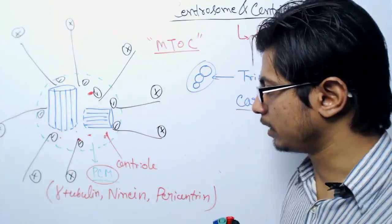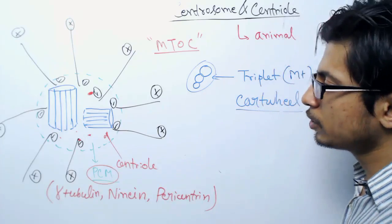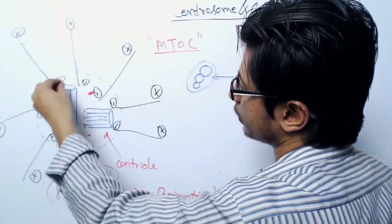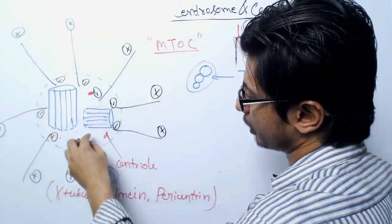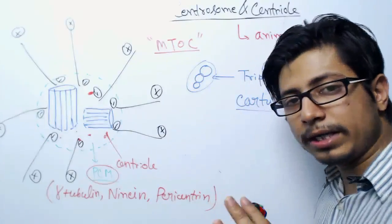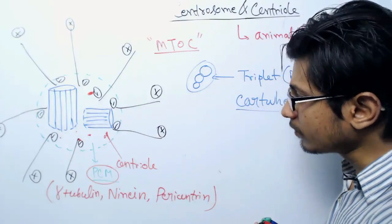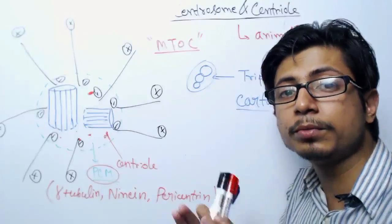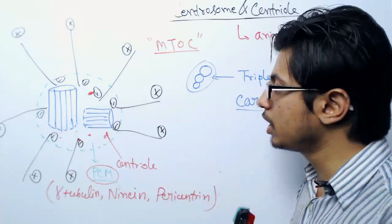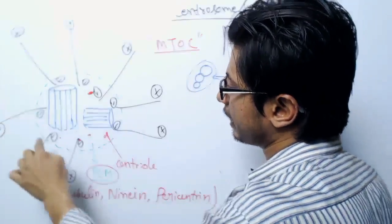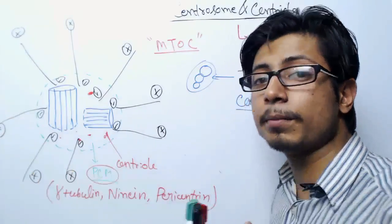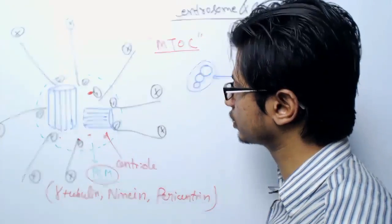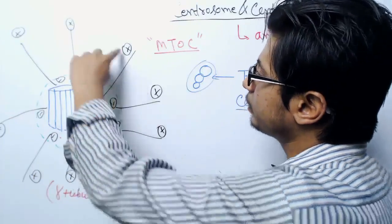If you look at the structure, in the PCM we have protein particles denoted by red dots. The PCM also has a position from where the microtubules originate. The black lines in the diagram represent microtubules radiating from the centrosome structure.